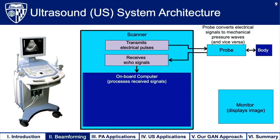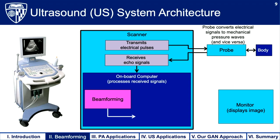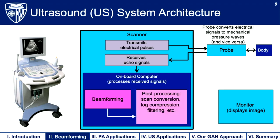The first step in the processing chain is beamforming — you can think of beamforming as the first line of software defense against a poor-quality image. After beamforming, the signals undergo further post-processing such as scan conversion, log compression, and filtering, and finally the image is ready for display on the monitor.